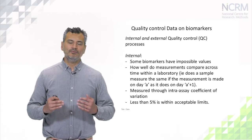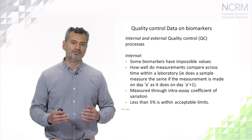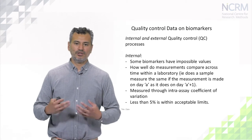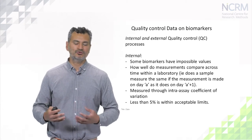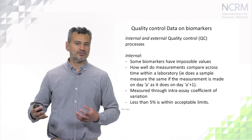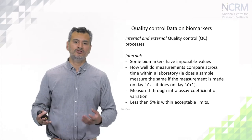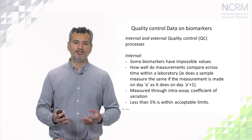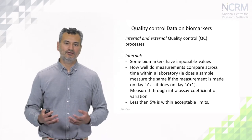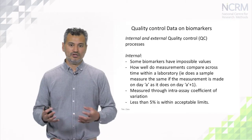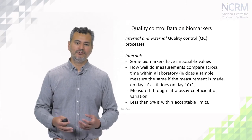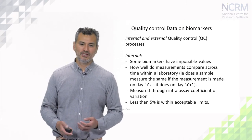Independently of that, when blood-based biomarkers are processed in a laboratory, what the laboratory does is test the procedures that derive the blood-based analytes and repeat this on another day. Hopefully there's a very strong correlation between the analytes obtained on one day compared to another day. That's called the intra-assay coefficient of variation, and ideally we want there to be a very small amount of variation — less than 5% is within acceptable limits.